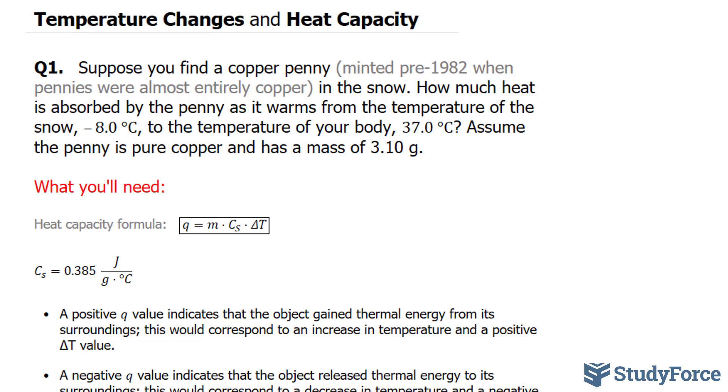So let's start by writing down everything we know. We know that the initial temperature is negative 8.0, so Ti equals negative 8.0. The final temperature will be the body temperature, so Tf equals 37.0 Celsius, and the mass is 3.10 grams.